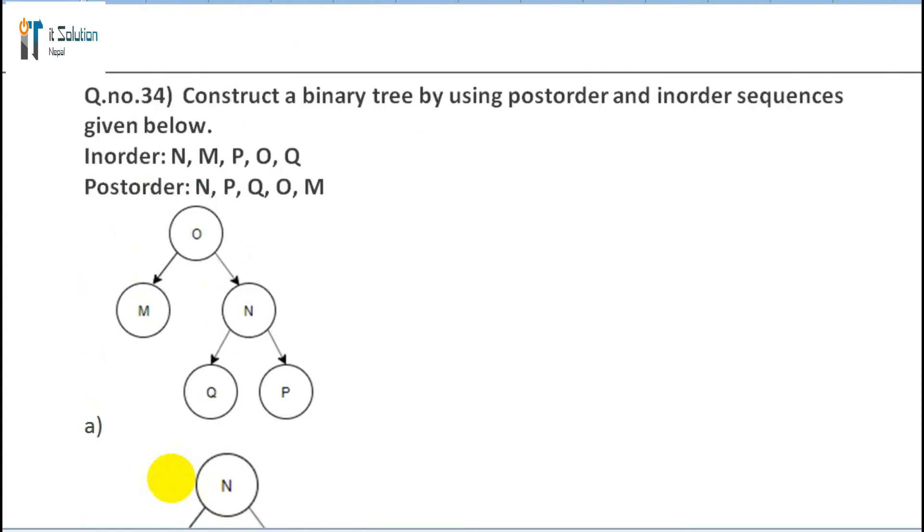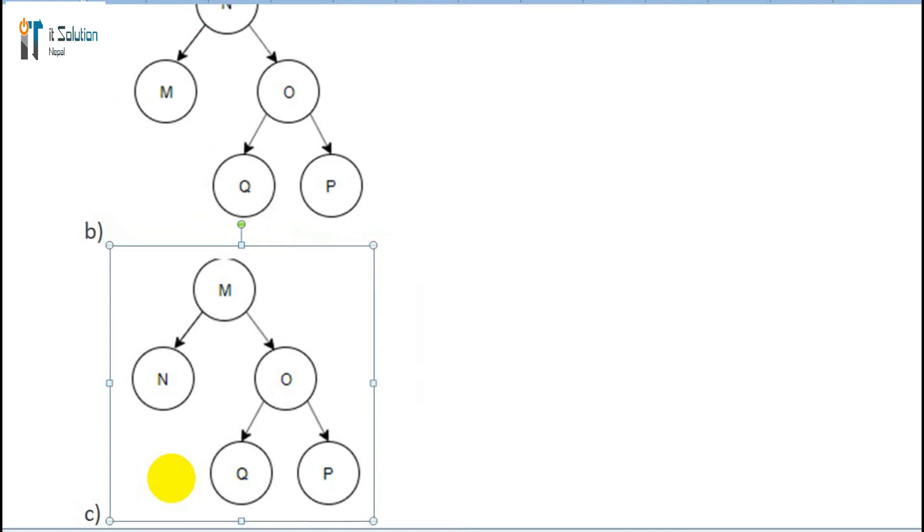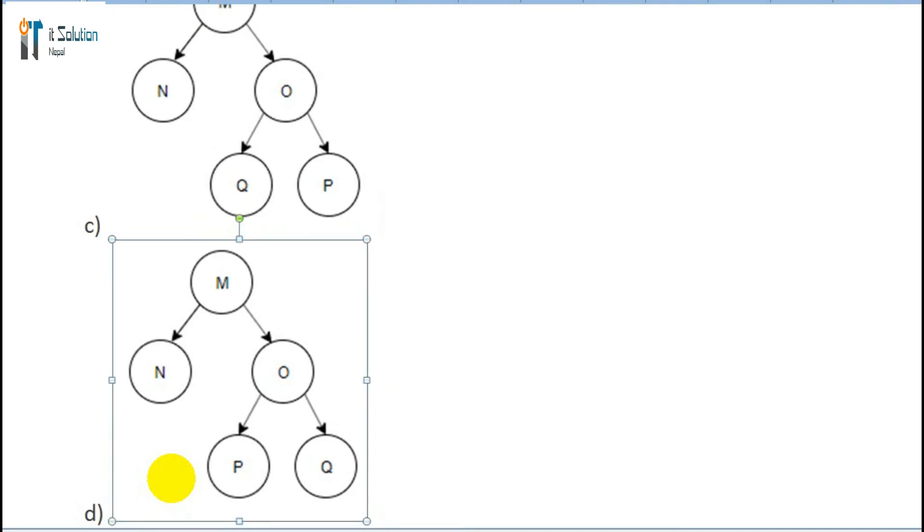Question 34: Construct a binary tree using postorder and inorder sequences given below. Inorder: N M P O Q. Postorder: N P Q M. Then the binary tree is: A, B, C, or D.